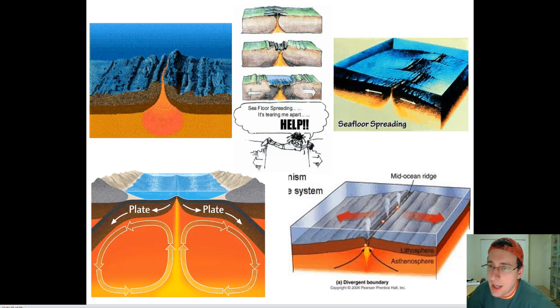The idea of seafloor spreading—that magma rises from the inner core through the mantle, pushes through the crust of the Earth, and eventually creates new crust that pushes the continents apart—is actually the missing mechanism that Waggoner was looking for to explain how the continents could possibly drift apart.